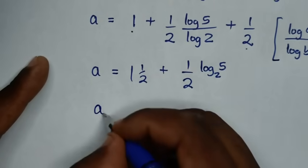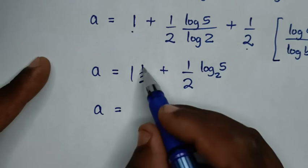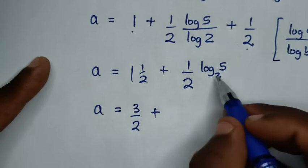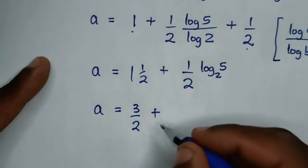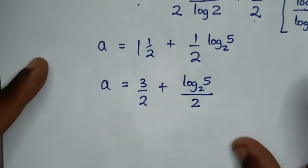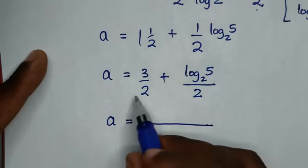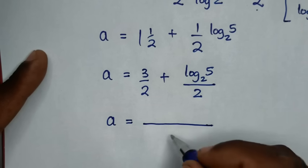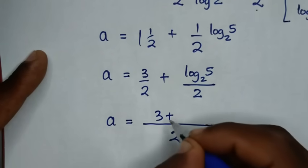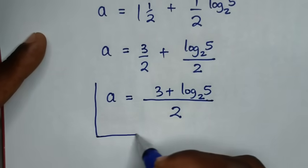Then it will be a is equal to 1 and a half plus 1 over 2 log of 5 base 2. Converting 1 and a half to an improper fraction: 1 times 2 is 2, plus 1 is 3, so it will be 3 over 2 plus log of 5 base 2 over 2. This gives a is equal to 3 plus log of 5 base 2, all over 2. So this is our final answer.